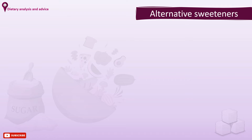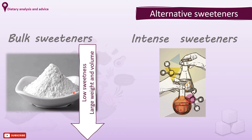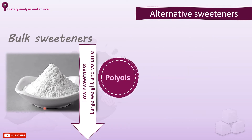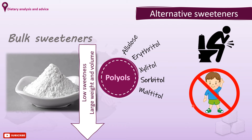Alternative sweeteners are classified into bulk and intense sweeteners. Bulk sweeteners are ingredients that are as sweet as sugar and take up the same amount of volume. They have a relatively low sweetness in relation to their weight and volume and are therefore needed in large amounts. Mostly known as polyols, they are available in different forms. They can cause osmotic diarrhea if consumed in large amounts and are contraindicated in small children. It is probably wise to avoid all artificial sweeteners in preschool children.